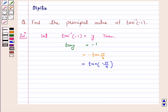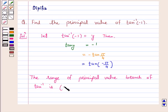Now, according to the key idea, the range of the principal value branch of tan inverse is open interval minus pi by 2 to pi by 2, and tan of minus pi by 4 is equal to minus 1. So therefore,